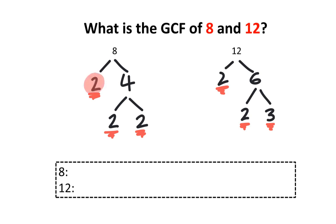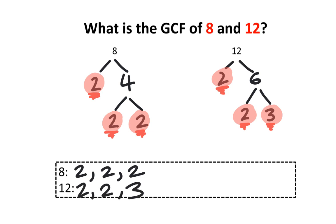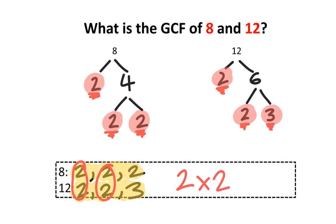The prime factors of 8 are 2, 2, and 2. I'm going to write that down right over here: 2, 2, and 2. Meanwhile, the prime factors of 12 are 2, 2, and 3. I'm going to copy that down here as well: 2, 2, and 3. Take a close look at the prime factors of 8, and also take a close look at the prime factors of 12. What do they have in common? You'll notice they share a pair of 2s, and they also share another pair of 2s. So 2 times 2 gives you 4. Therefore, the GCF of 8 and 12 is 4.